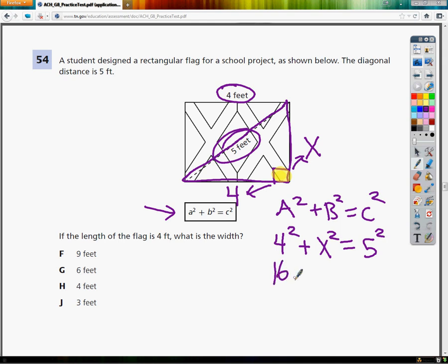I need to work the math, so I do 16, 25, X squared. Draw my line. I need to get X by itself, so I need to get rid of plus 16, so I subtract. X squared equals 9.